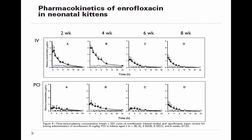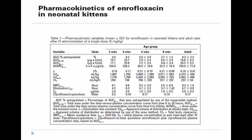Returning to the enrofloxacin slide — a more lipid-soluble drug in neonatal kittens — looking at IV plasma concentrations in kittens from two to eight weeks of age, plasma concentrations decrease over time even though the kittens receive the same dosage. The volume of distribution increases over time as kittens develop more body fat relative to body water, so there is more fat for the drug to distribute into, leading to lower plasma concentrations in the older kittens.